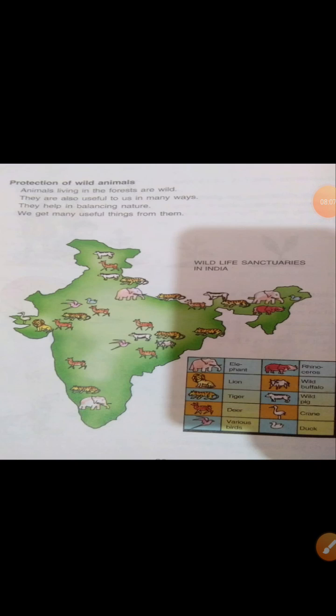For the protection of animals, wildlife sanctuaries are made across the country. On the map of India shown here, various animals are indicated at different locations — elephant, lion, tiger, deer, wild buffalo, wild pig, crane, and duck. Find out which wildlife sanctuary exists in your state.